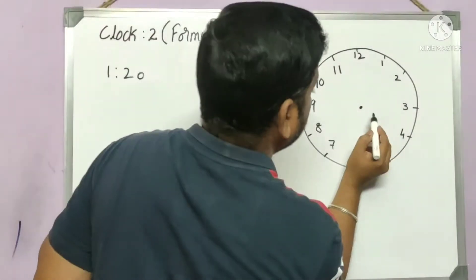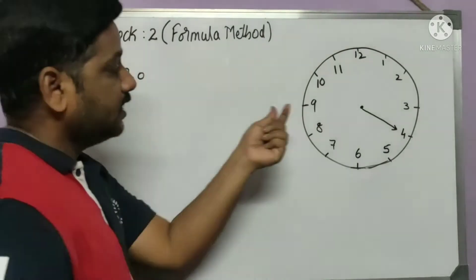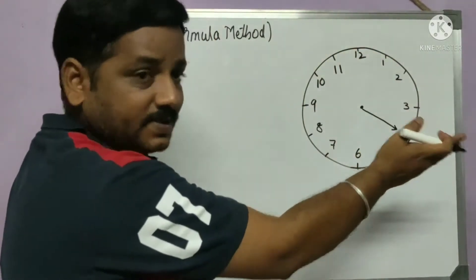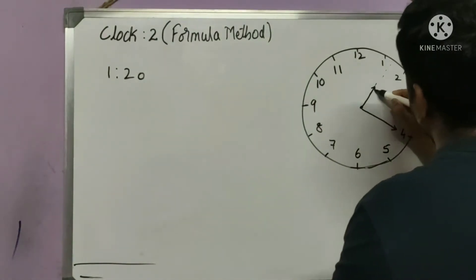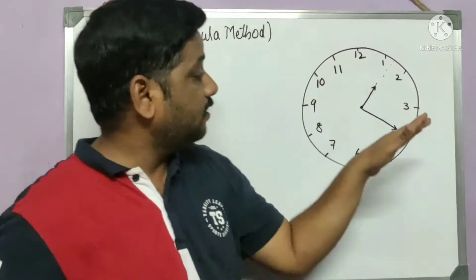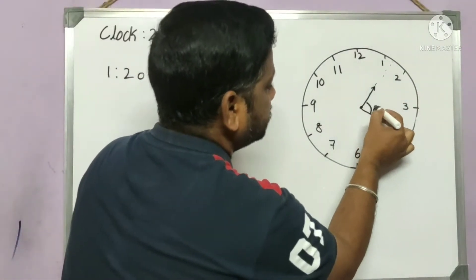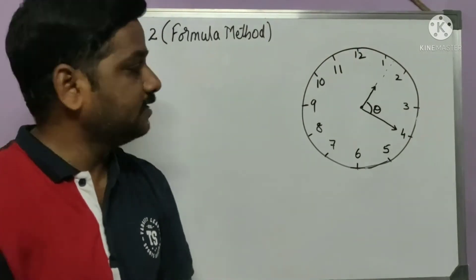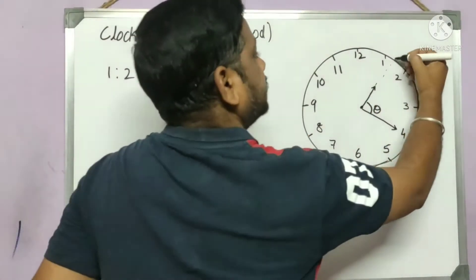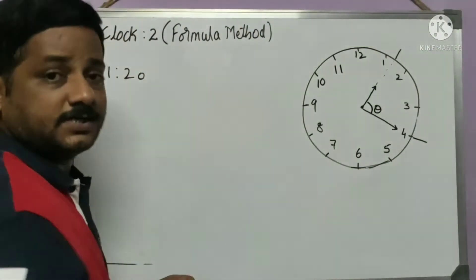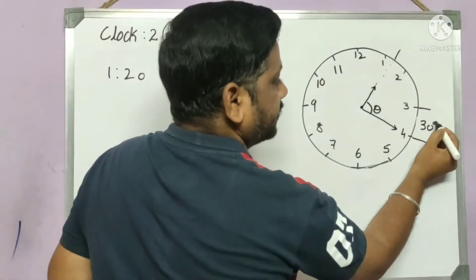First, let me plot the diagram. The minute hand will be at 20 minutes, so it points to 4. The hour hand will not be exactly at 1 o'clock because it is already 1:20 — it will be somewhere past 1. So the minute hand is exactly at 4, but the hour hand is not exactly at 1. We need to find the angle theta between these two hands.